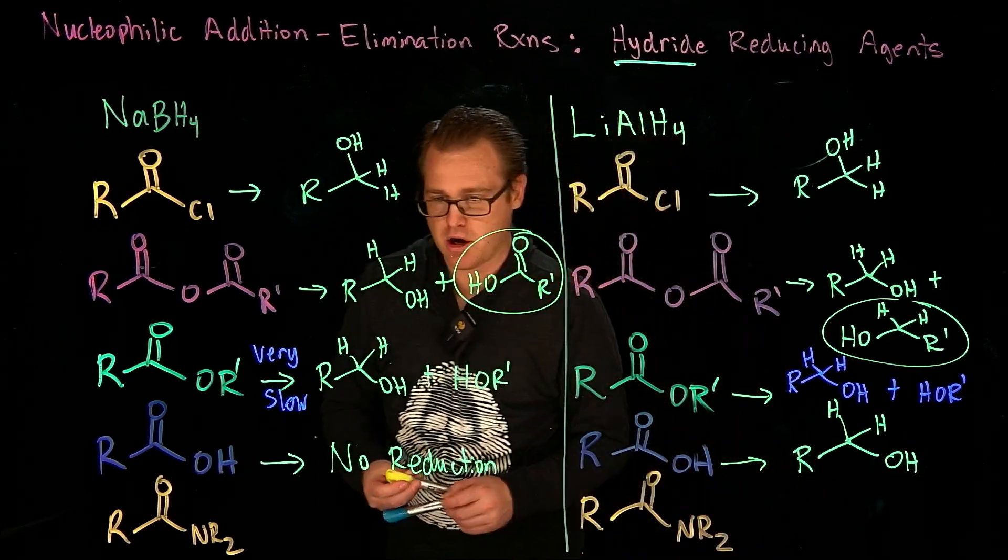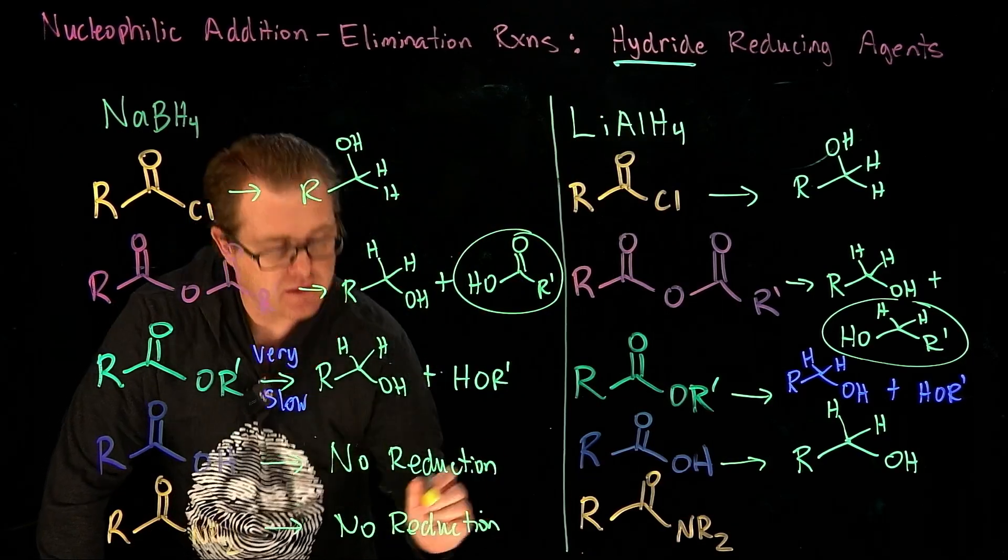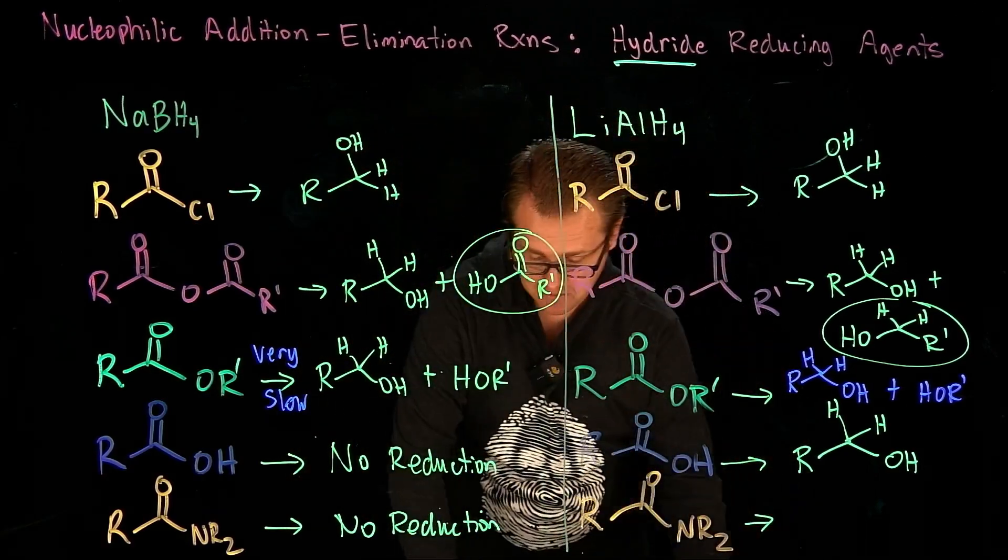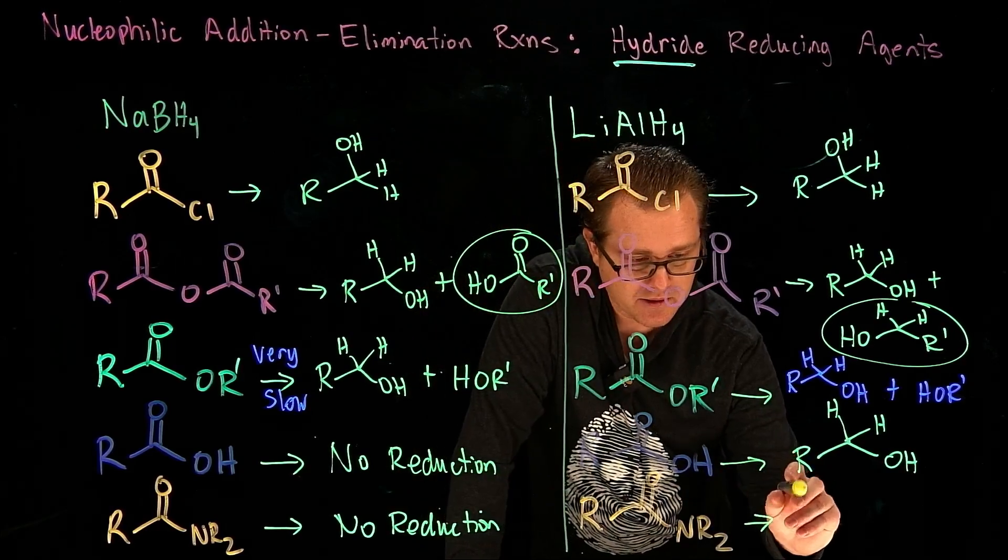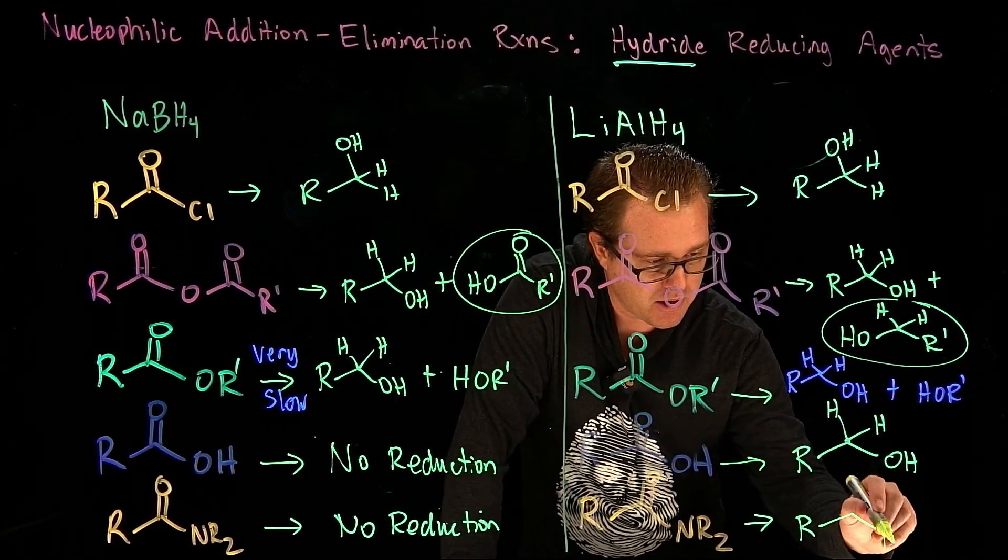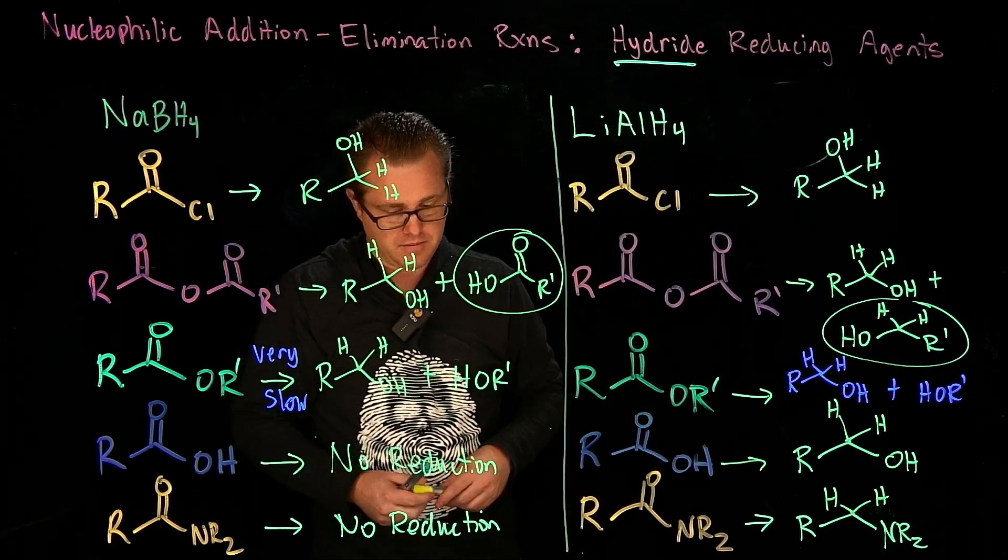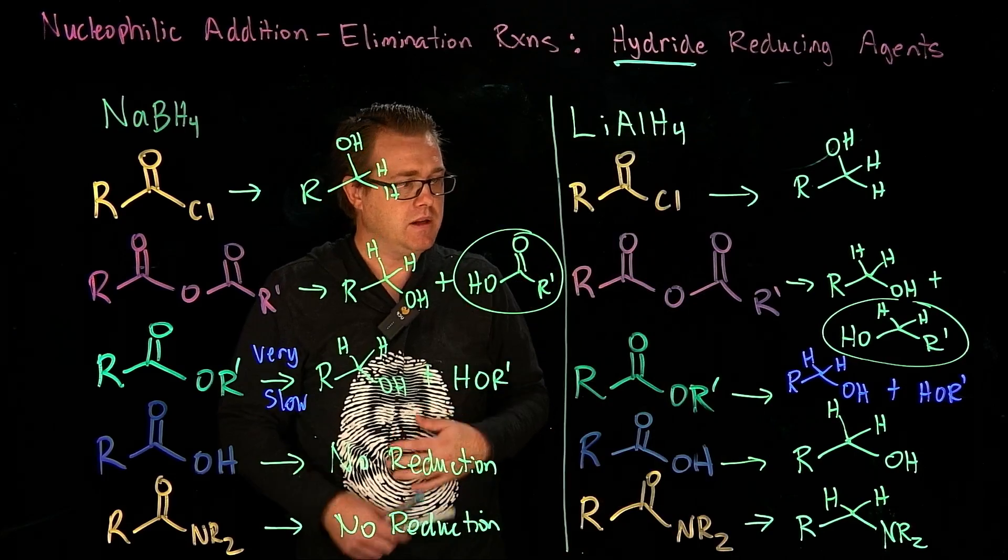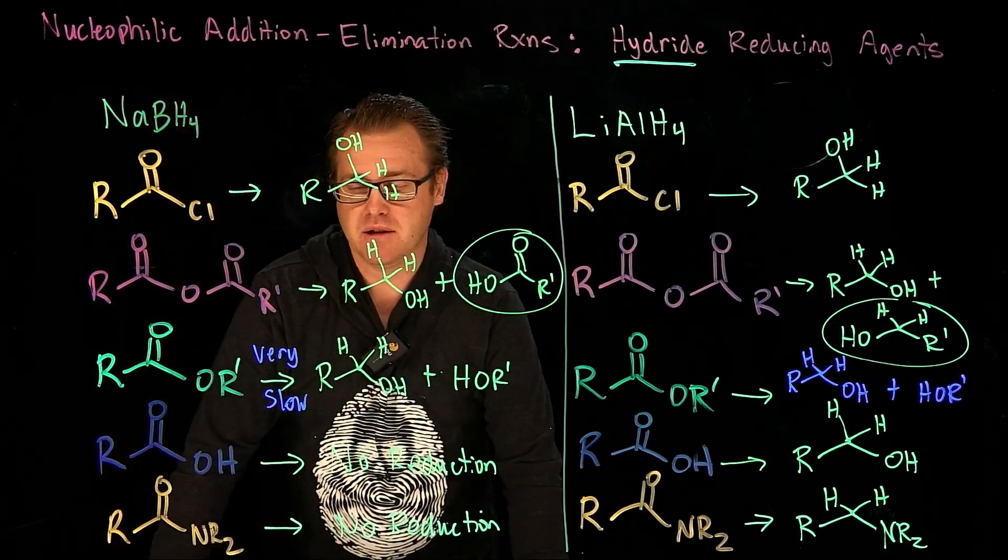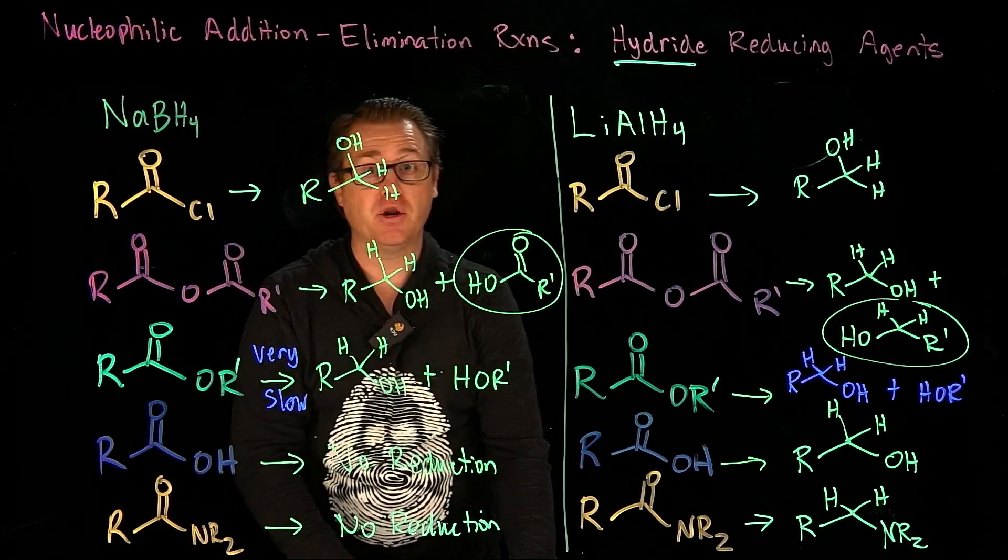And now our last one is our amide. No reduction for this guy with sodium borohydride - it's not strong enough. But lithium aluminum hydride is, and that's going to generate, this is interesting, not an alcohol but our amine. So now when we remember these features of these two reagents and what they can do very well, what they can't do very well or not at all, then we can use that to our advantage.